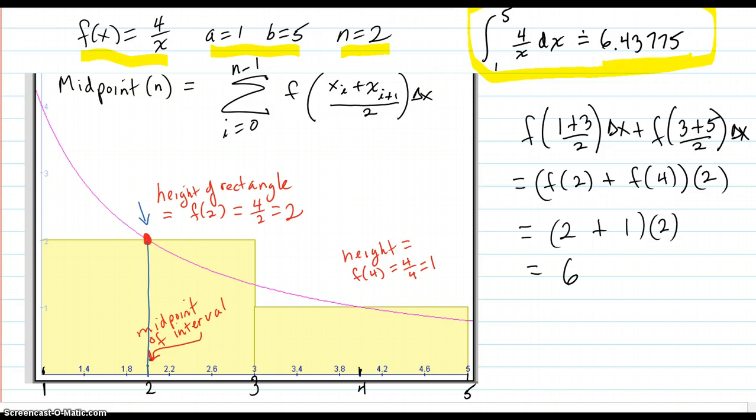Times the delta x across here, and that gives you your rectangle area. It's not a left and it's not a right. You take the midpoint.